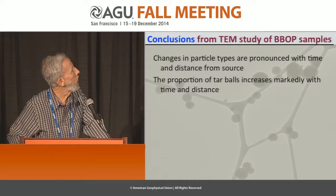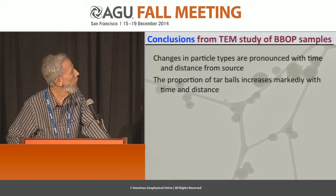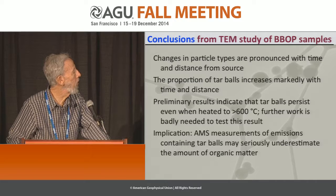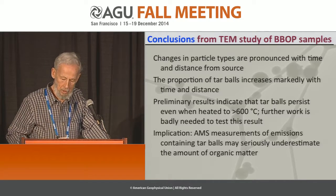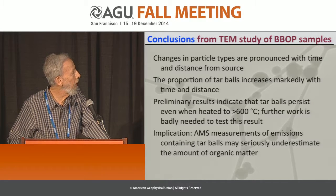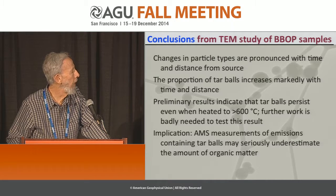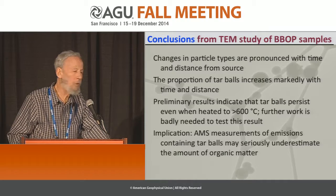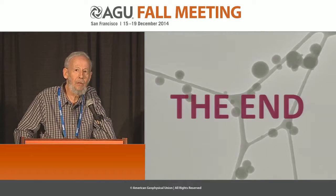Conclusions: Changes in particle types are pronounced with time and distance from the source. The proportion of tarballs increases markedly with time and distance, and they are not visible by any technique other than TEM or SEM. Preliminary results indicate that they persist even when heated above the AMS temperature, and the implication is that we really need to consider this if we want to estimate the total organic mass. Thank you very much.